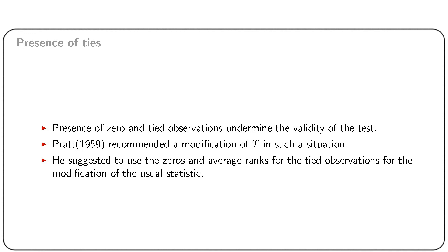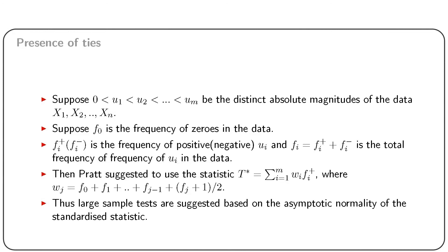Although we assumed continuity of f, meaning P(xi = 0) = 0 for every i, in practice an observation may be 0. In addition, the absolute values of observations may be tied. The presence of zero and tied observations undermines the validity of the test. Pratt recommended a modification of T in such a situation. Pratt actually suggested using the zeros and average ranks for the tied observations for the modification of the usual statistic. You can consult the slide for details on this tied arrangement.